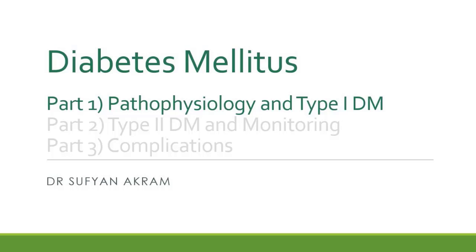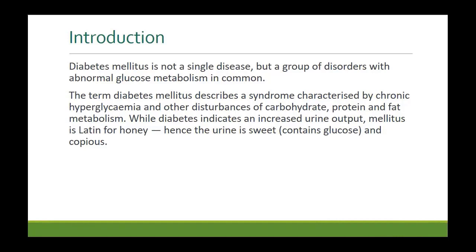Diabetes mellitus is actually a syndrome, not a single disease — it is a group of disorders. Abnormal glucose metabolism is at the center, but there are many other things around it, including metabolic disorders affecting protein metabolism and lipid metabolism. There is chronic hyperglycemia, which means elevated glucose levels — this is how we clinically diagnose diabetes. The word 'diabetes' indicates increased urine output and 'mellitus' is Latin for honey, so there are copious amounts of sweet urine.